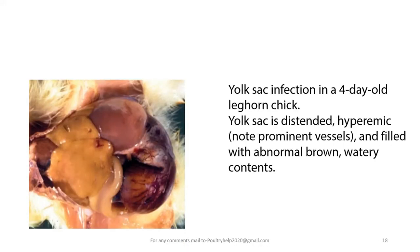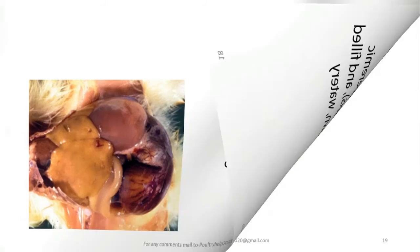In this four-day-old chick, the yolk sac is quite distended, hyperemic, and the blood vessels can be seen easily. It is filled with an abnormal brown watery content.